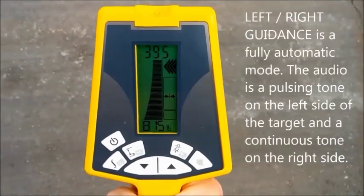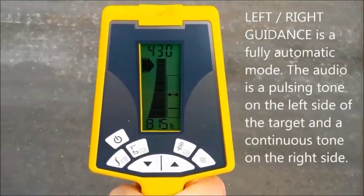Guidance mode offers a pulsing tone on the left side of the target and a continuous tone on the right side.